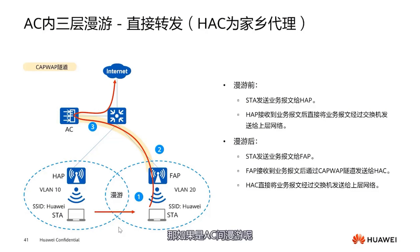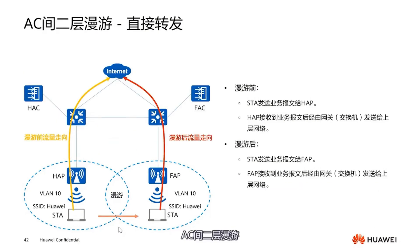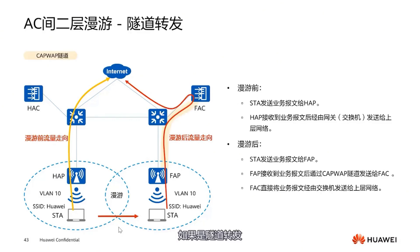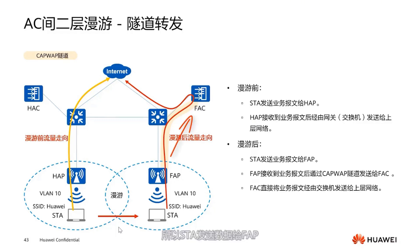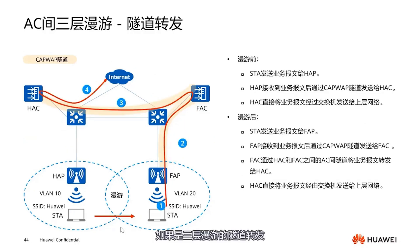For inter-AC roaming: inter-AC Layer 2 roaming between two ACs — if it's direct forwarding, data is directly forwarded through the switch. If it's tunnel forwarding with inter-AC Layer 2 roaming, data before roaming directly passes through the switch and is sent out. After roaming, because it's CAPWAP tunnel forwarding, the STA sends data to FAP, FAP goes to FAC, and because it's Layer 2 roaming, data is sent directly to the network.